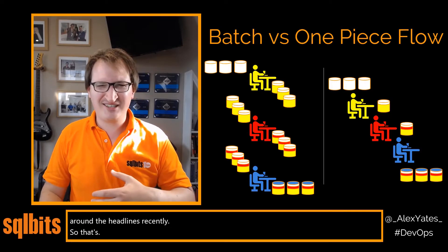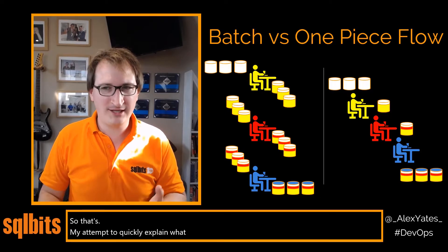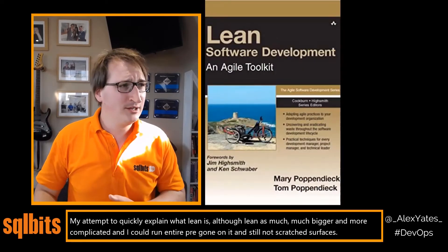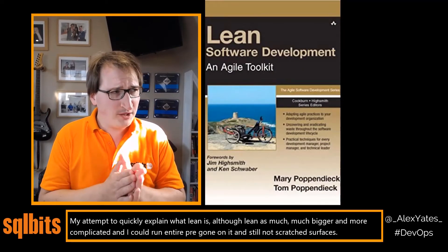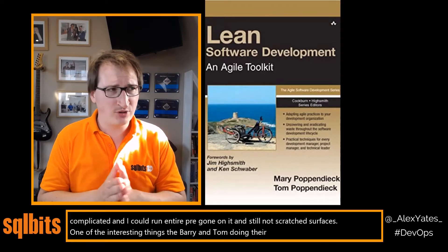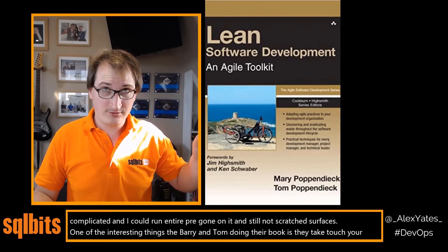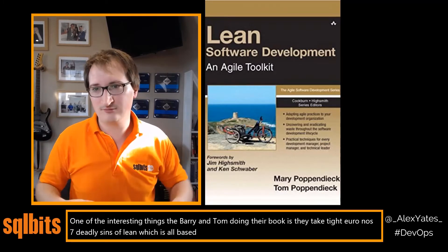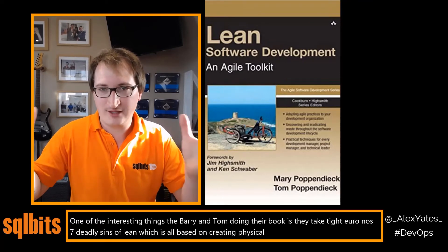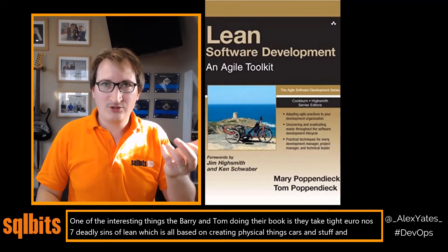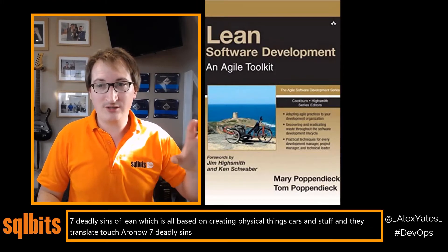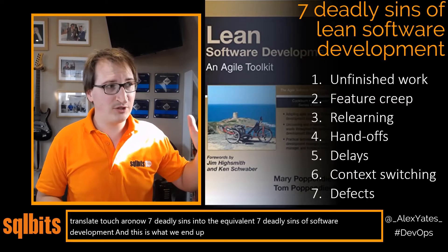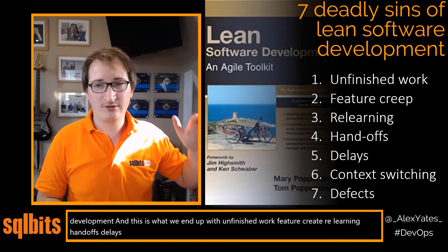That's my attempt to quickly explain what Lean is, though it's much bigger and more complicated. One interesting thing Mary and Tom do in their book is take Taichi Ohno's Seven Deadly Sins of Lean — based on creating physical things like cars — and translate them into the equivalent Seven Deadly Sins for software development: unfinished work, feature creep, relearning, handoffs, delays, context switching, and defects.